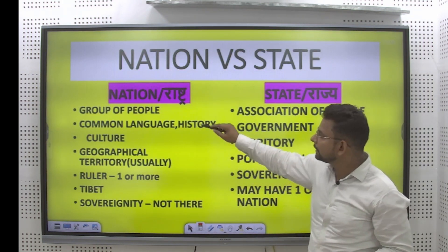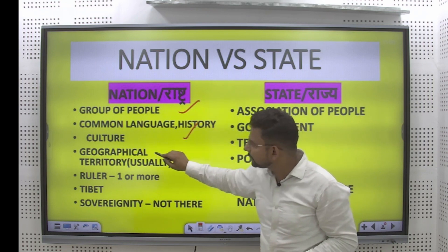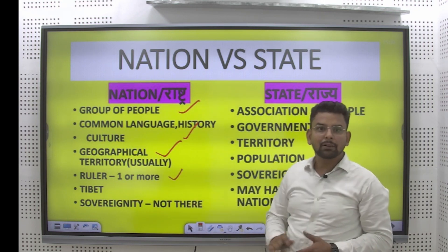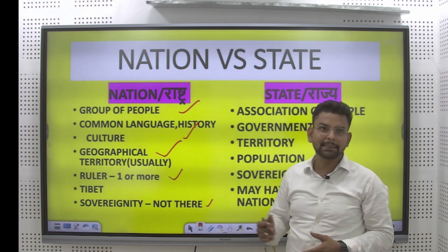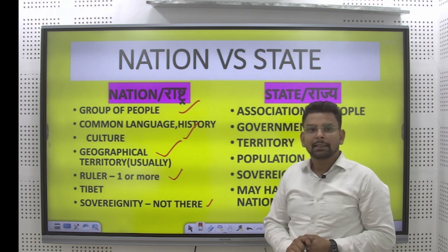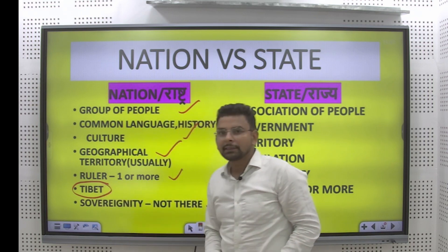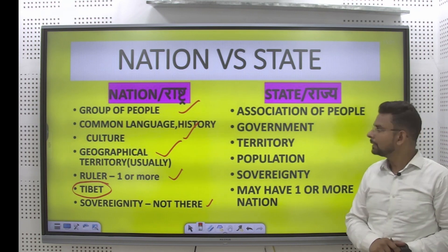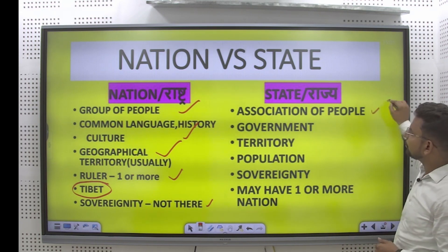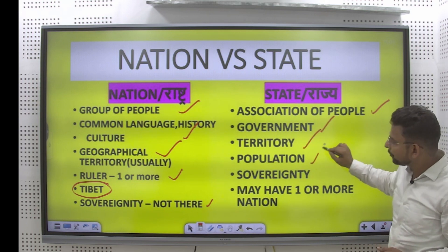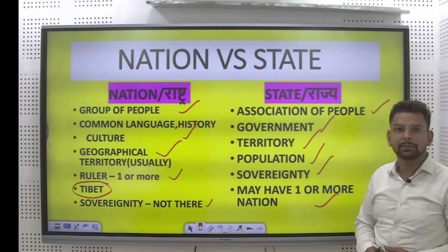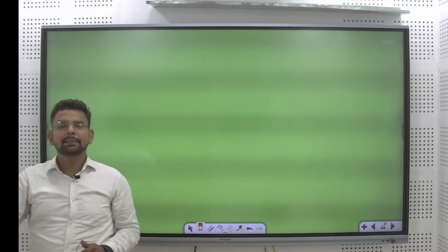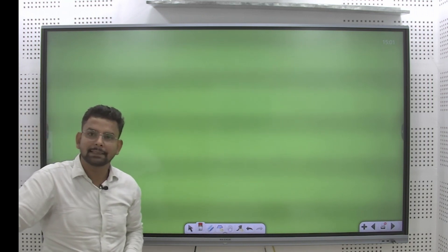I have said earlier, it was a group of people with common language, history, geographical territory, usually it could be there. Ruler, there could be one or more rulers. Sovereignty, not there, it might be there or might not be there. Tibet is a good example. The Tibet belongs to the same ethnicity. The people of Tibet are belonging to the same ethnicity. And second is the state. It is association of people, government, territory, population, sovereignty, may have one or more nation. Apart from it, in the definition of state, one thing I want to give an example, certain examples related to it like that of Tibet.